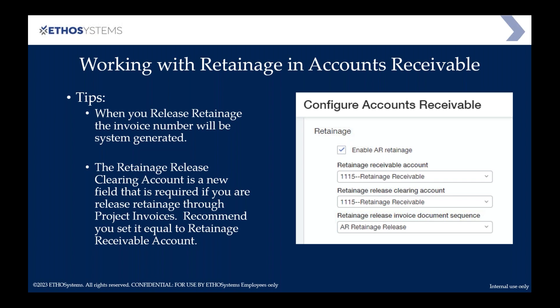Also, if you've been on the system for more than a year and try to release retainage through the project contracts or project invoicing screens, you might get an error message saying it's missing a GL account. In the AR configuration screen, you have the ability to enable retainage. There is a retainage receivable account, but they've also set up a clearing account — that field might be blank in your system. It is a required field if you're going to do retainage through project invoices, so make sure it's set to the same as the accounts receivable account.